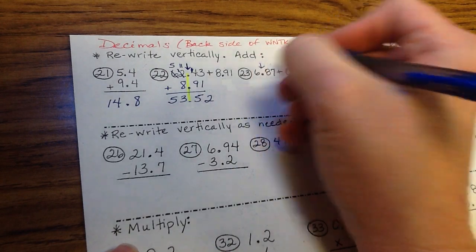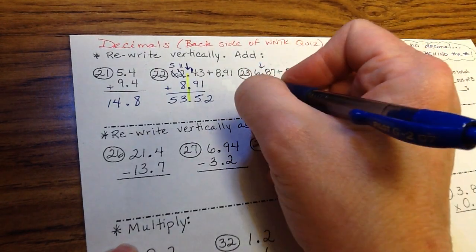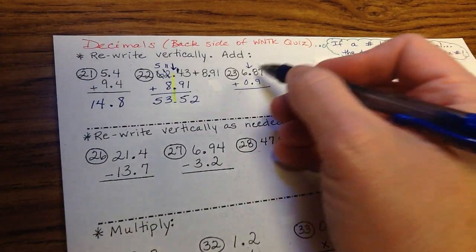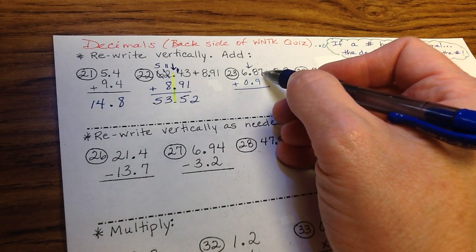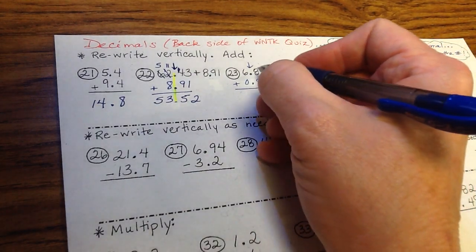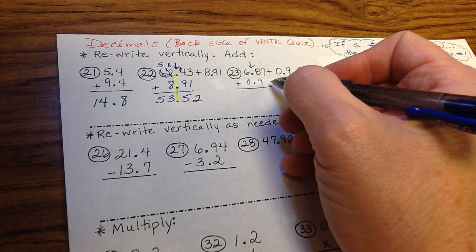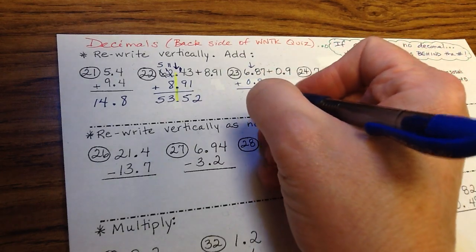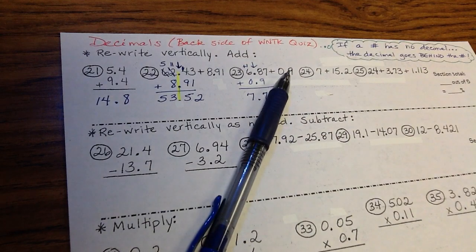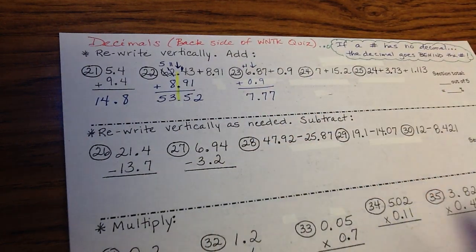Number 23. Lining up the decimals, 0.9. It's okay that it doesn't go to the end here. This is like 9 dimes, and this is like $6, 8 dimes, and 7 pennies. $6.87. So the 9 dimes has to line up with the 8 dimes place value. 7 plus nothing is 7. 8 plus 9 is 17. Carry the 1. 7.77.